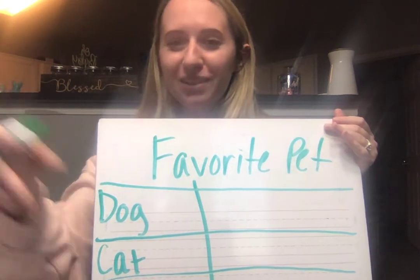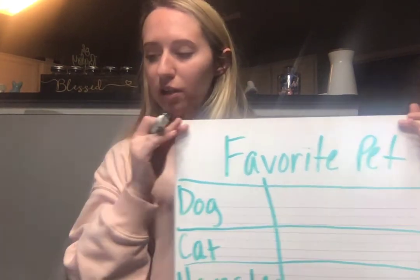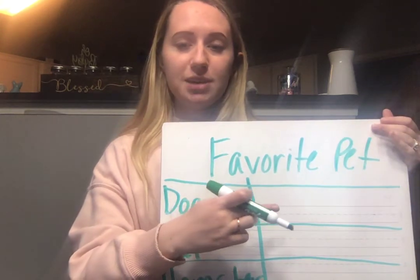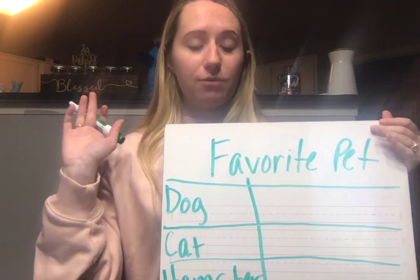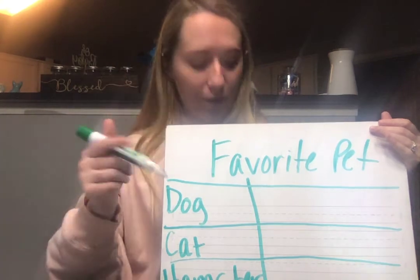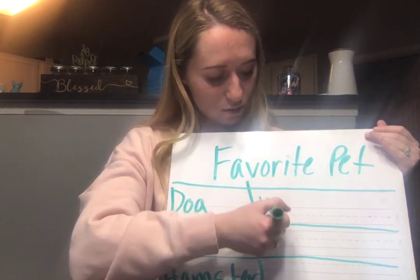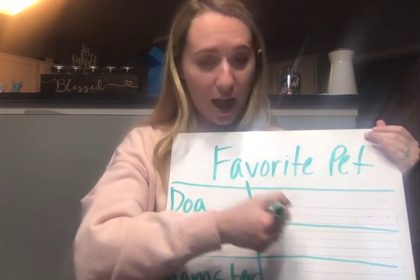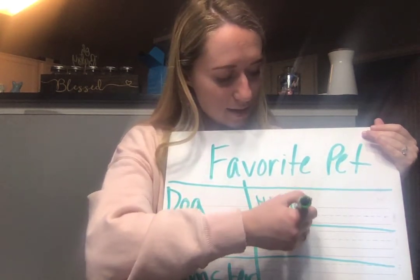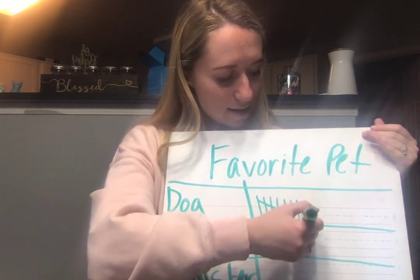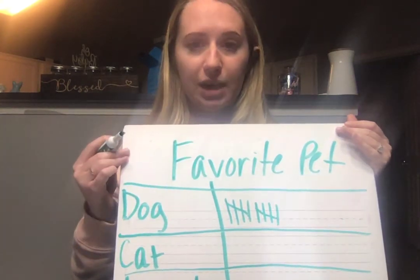With my little fake class, I had 10 people vote for dog. So I'm going to put 10 tallies next to dog. Remember, every fifth one I cross. So: 1, 2, 3, 4, 5, 6, 7, 8, 9, 10. So there's 10 tallies for dog.